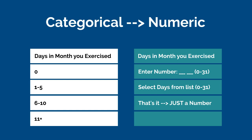Days in the last month you exercised: if you capture this as '0 days,' '1 to 5 days,' '6 to 10 days,' or '11 or more days,' that is a categorical variable. You cannot capture a mean; you would report N and percent and could report cumulative percents or the most frequent response. However, if days exercised in a month is entered as a number or selected from a list of days, that is a numeric variable. You can calculate a mean, median, standard deviation, IQR, min, and max. You can recategorize it later if needed, but if you capture it as categories, you cannot make it numeric. Capture it in numbers when you can.